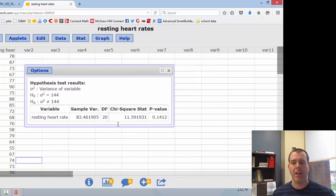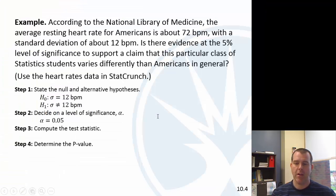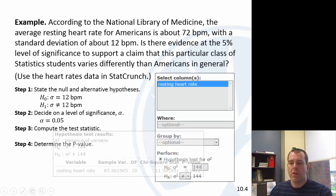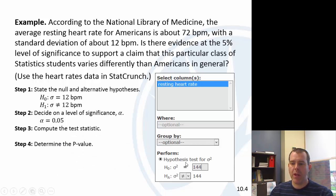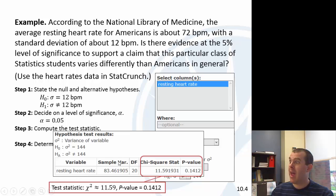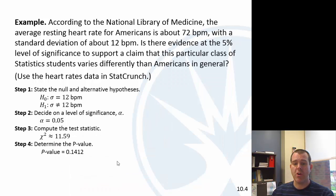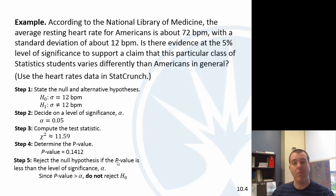There are our results. We have a chi-square of about 11.59 and a p-value that's small but not really that small — certainly not below our threshold. We put in 144 for the variance, and we got this chi-square and p-value. The p-value is 0.1412, which is not less than our threshold, so we do not reject — it's not less than our level of significance.